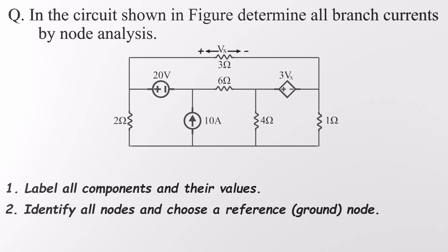On to step two. Identify all the nodes and pick one as our reference or ground node. Quick refresher. What's a node? It's any point where two or more components meet. And here's a tip. If two points are directly connected, no resistor or voltage source in between, they count as the same node. Now take a good look at the circuit. How many nodes can you find? Got it? There are five.